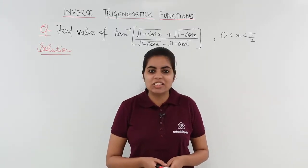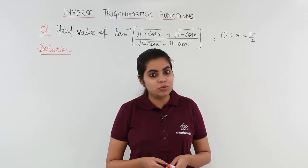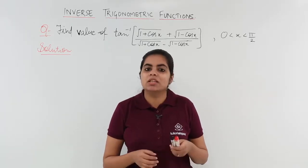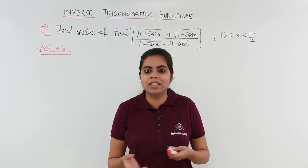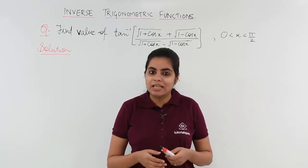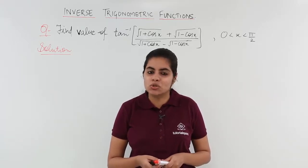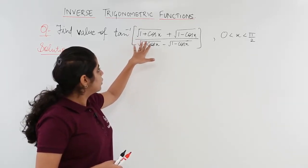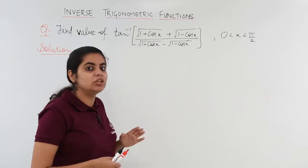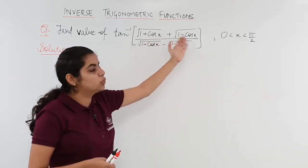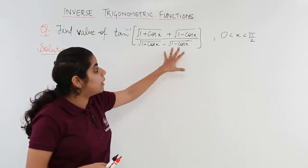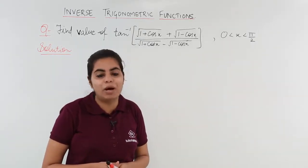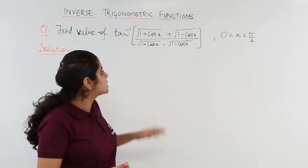In this video, let's see the next numerical problem based on the concept of principal value branch in inverse trigonometric functions. The question is a bit lengthy so students tend to leave it unnoticed, but let's understand it properly and make it simple to solve. Find the value of tan inverse of (√(1+cosx) + √(1-cosx)) / (√(1+cosx) - √(1-cosx)), where x lies between 0 to π/2, that is 0 to 90 degrees.